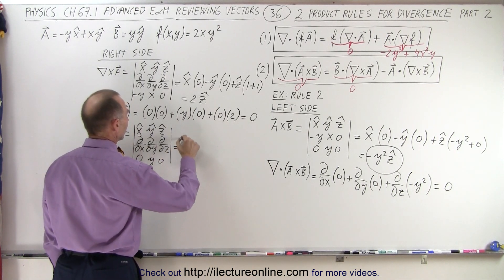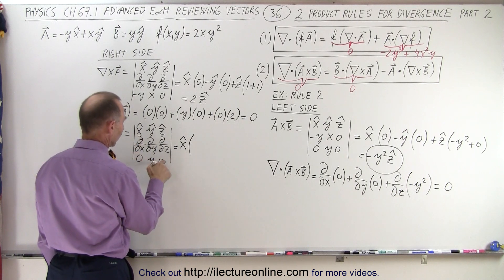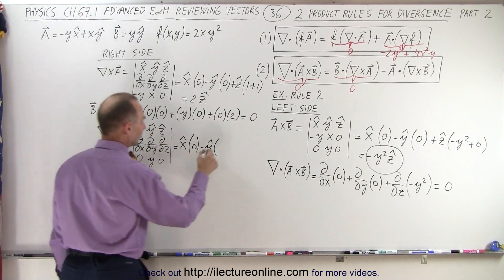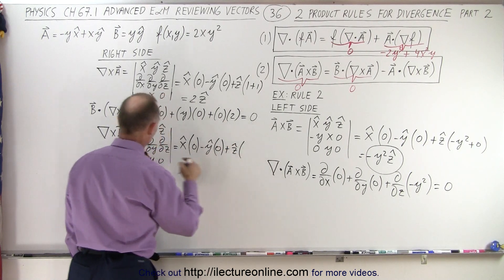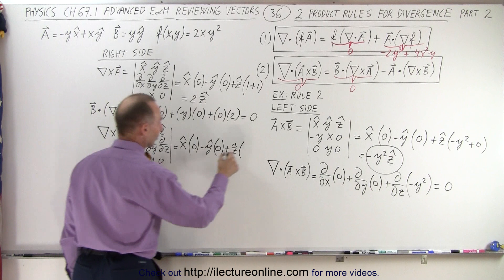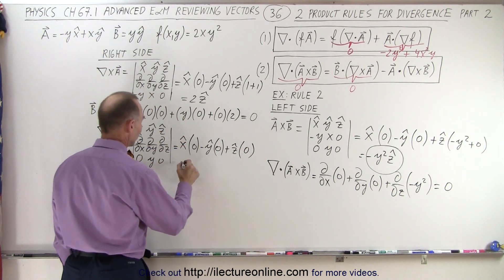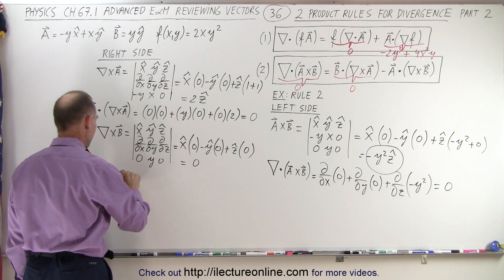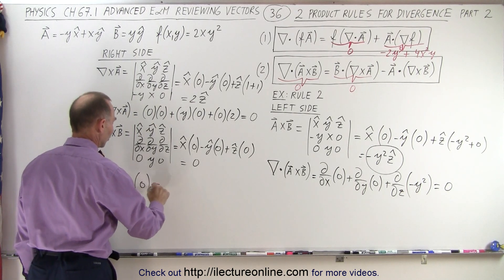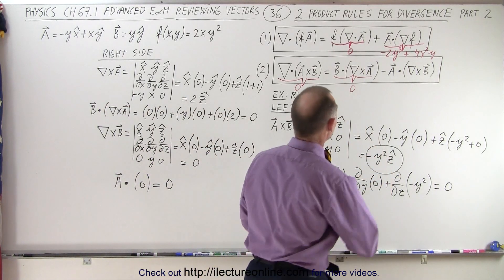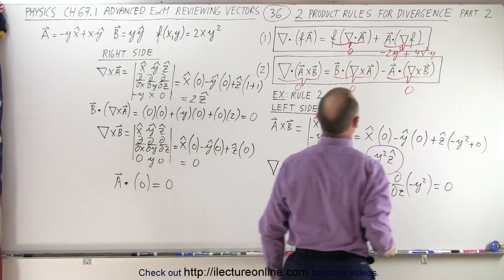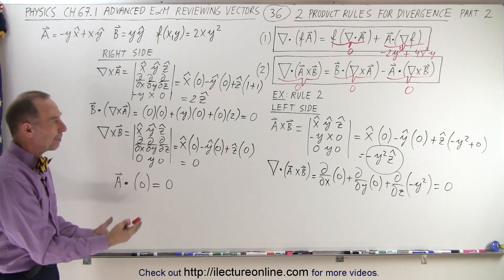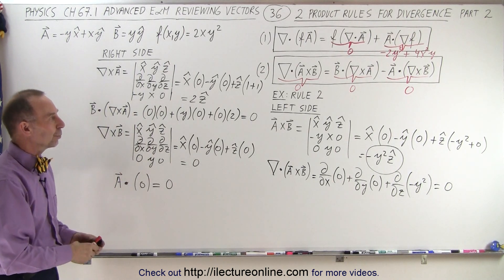The curl of B equals X unit vector times 0, minus Y unit vector times 0, plus Z unit vector times 0 — the curl of vector B equals 0. And of course the dot product of A with the zero vector is also equal to 0, so the second term is equal to 0 as well. So 0 equals 0 — that shows the rule works in this particular example, and it shows you how to apply that rule and how it works. And that is how it's done.